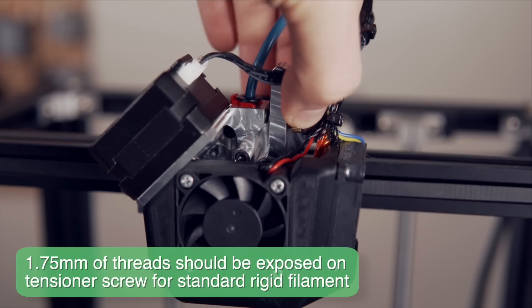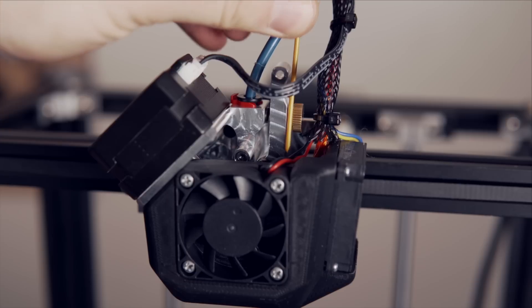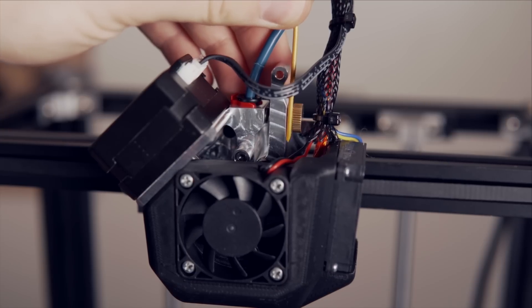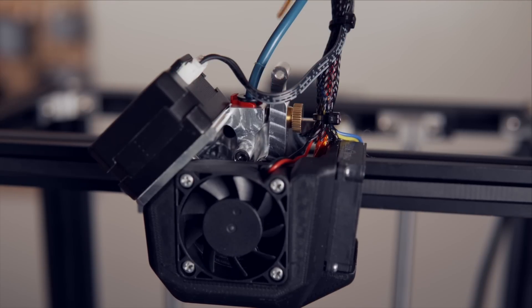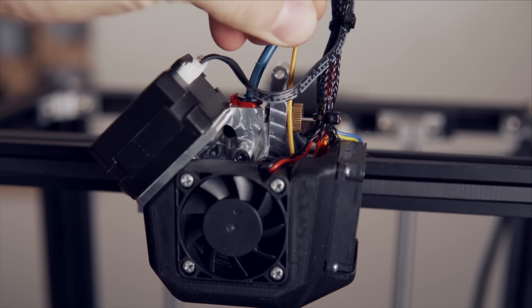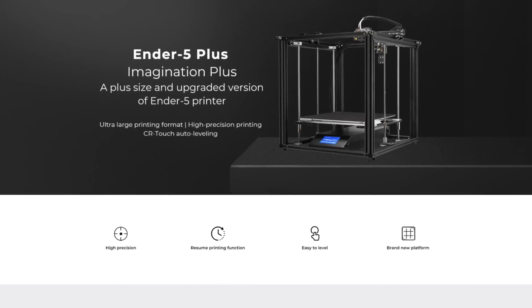For standard rigid filaments, Micro Swiss recommends having a 1.75 millimeter gap or amount of threads showing from that tension screw. That's how mine came from factory and I imagine most will, but you can always grab a piece of filament and shove it in between there and adjust the screw if needed. If you have an Ender 5 Plus, there are two additional steps.